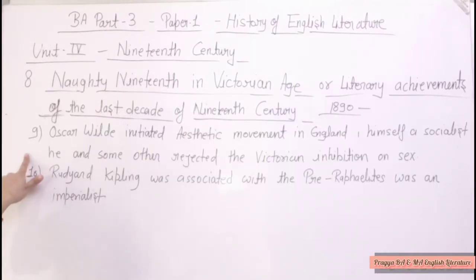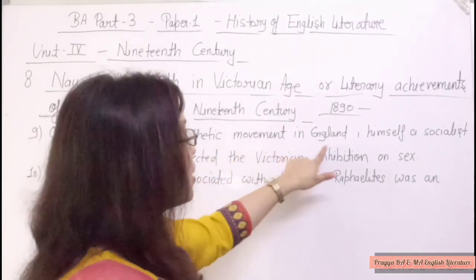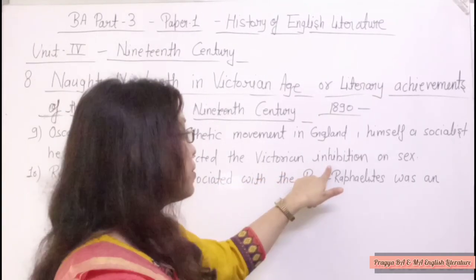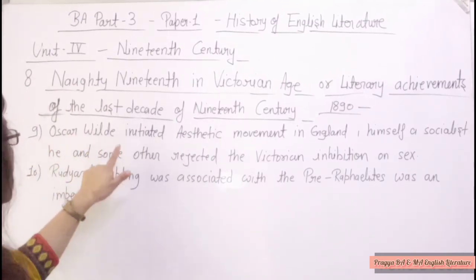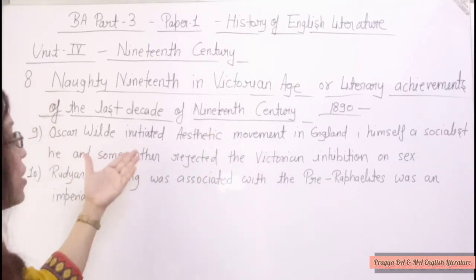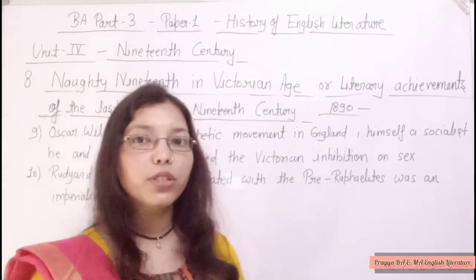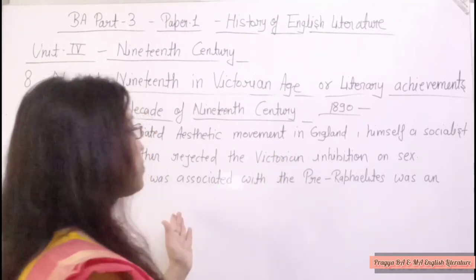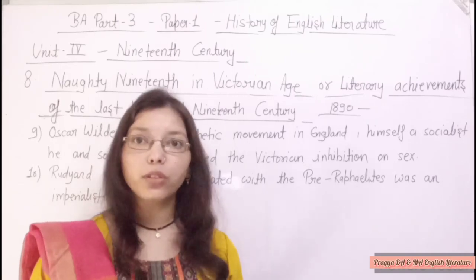Oscar Wilde initiated the aesthetic movement in England and himself was a socialist. He and some others rejected the Victorian inhibition on sex, totally rejecting the fixed moral values of the Victorian age. Oscar Wilde was related to the aesthetic movement — he started it in England.